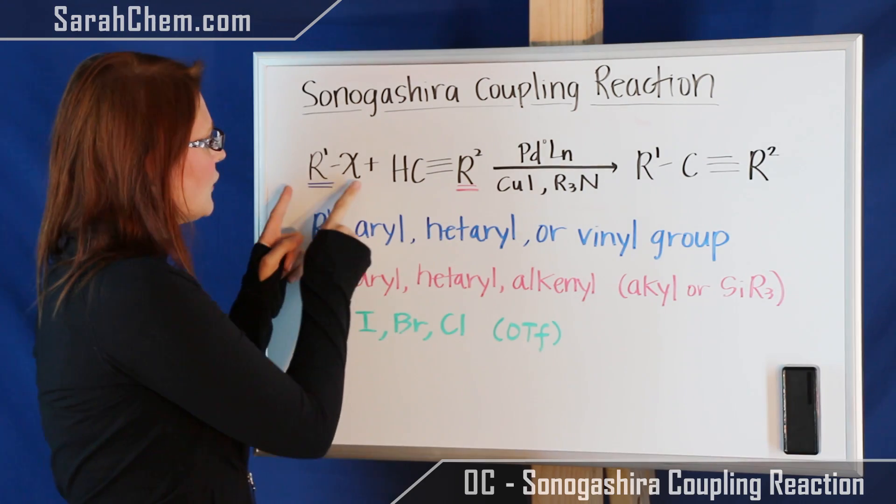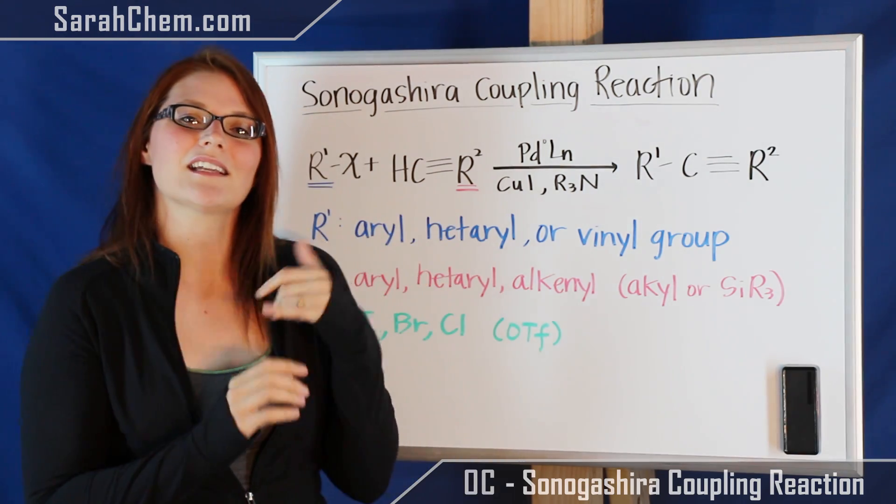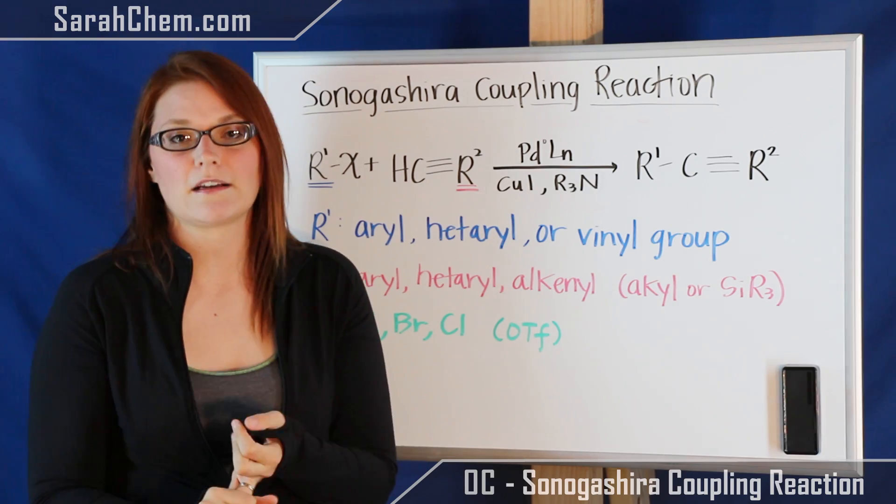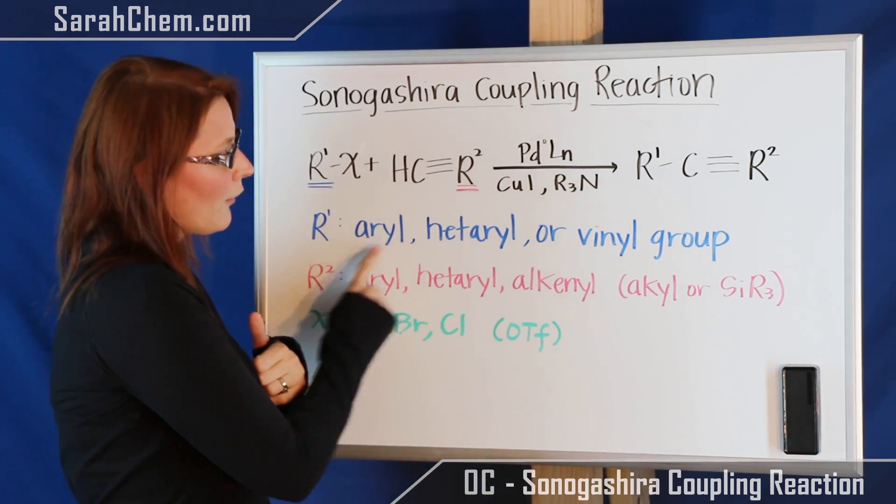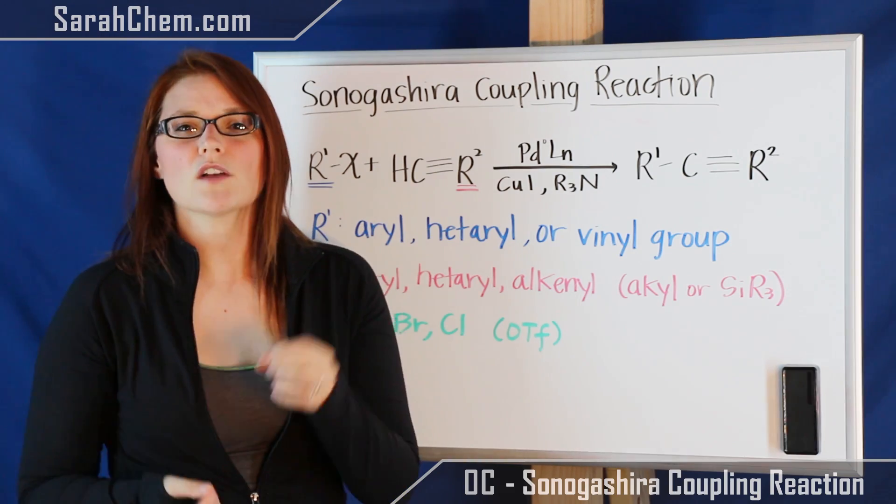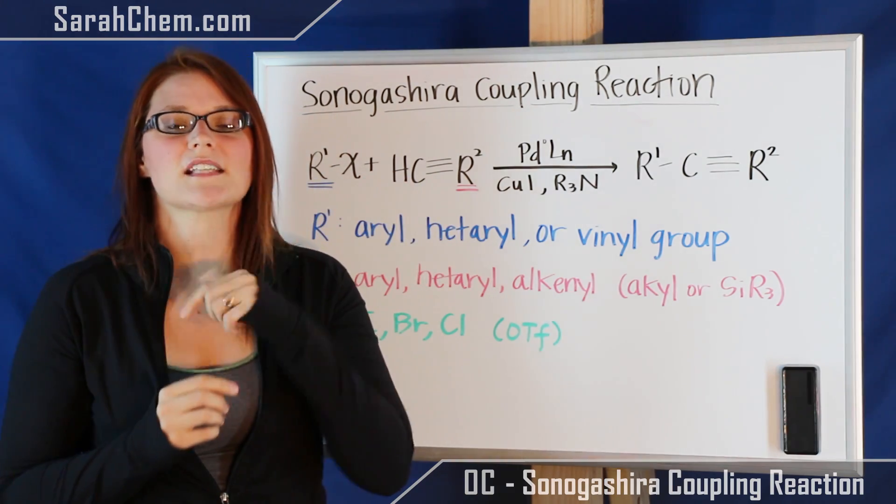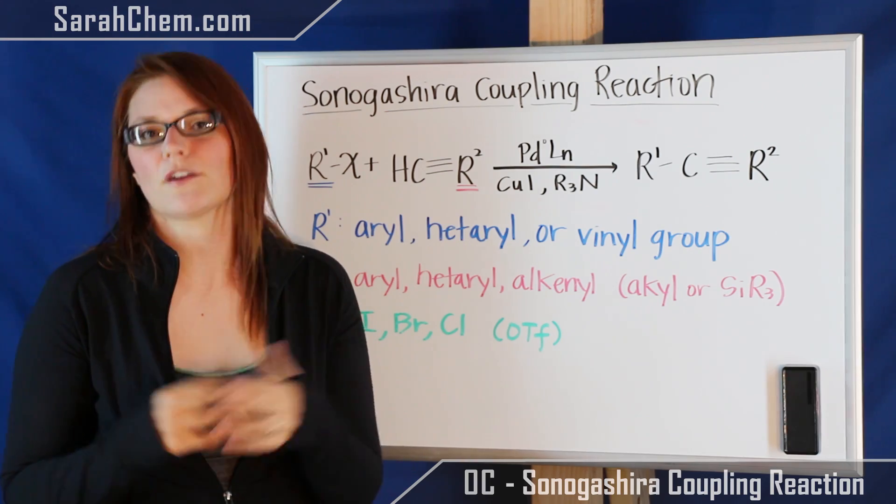First of all, most often if you were to look at a general description of this reaction, you'll see that it's called an aryl halide or a vinyl halide. So it can be aryl, it can be vinyl for that R group, and it can also be hetaryl, also called heteroaryl, which just means you have an aryl ring with some kind of alternate to carbon in there like nitrogen.